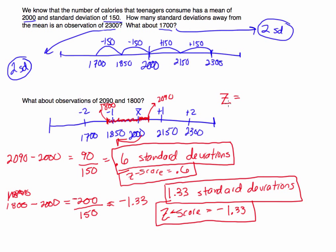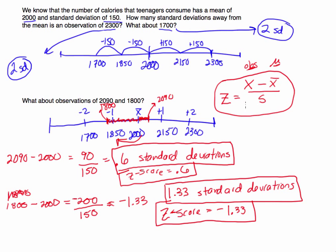So remember, when we calculated a z-score, we took the observation — which I'm going to call x — x is just an observation. And you subtract the mean, the sample mean x-bar. You could also see this as mu if you're talking about a population mean. You take the value x, you subtract the mean x-bar or mu depending on whether you're talking about the sample or the population, and you divide by the standard deviation. This is how you calculate a z-score for a sample; it's very similar for a population — it's the observation minus the mean divided by the standard deviation of the population. Z-scores are calculating how far you are from the mean.